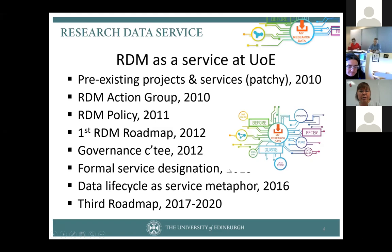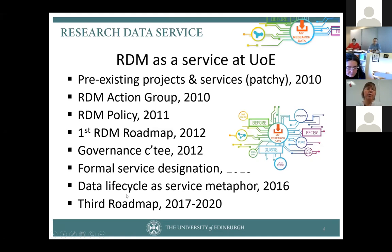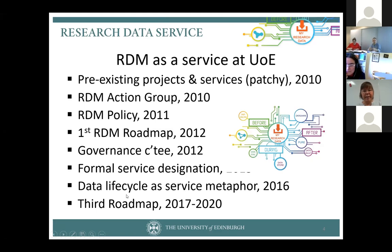My formal service designation date was around 2015. It coincided with our new CIO and Librarian to the University, Gavin McLaughlin, who decided that research data should be a service in itself. Instead of the coupled-together program we had been doing, it became a service following a service framework — with a service owner, service operations manager, and a designated business owner who was the chair of our steering group. We started using the data life cycle as a service metaphor in at least 2016. Now we're doing our third roadmap — always thought of as a living document, always improving.